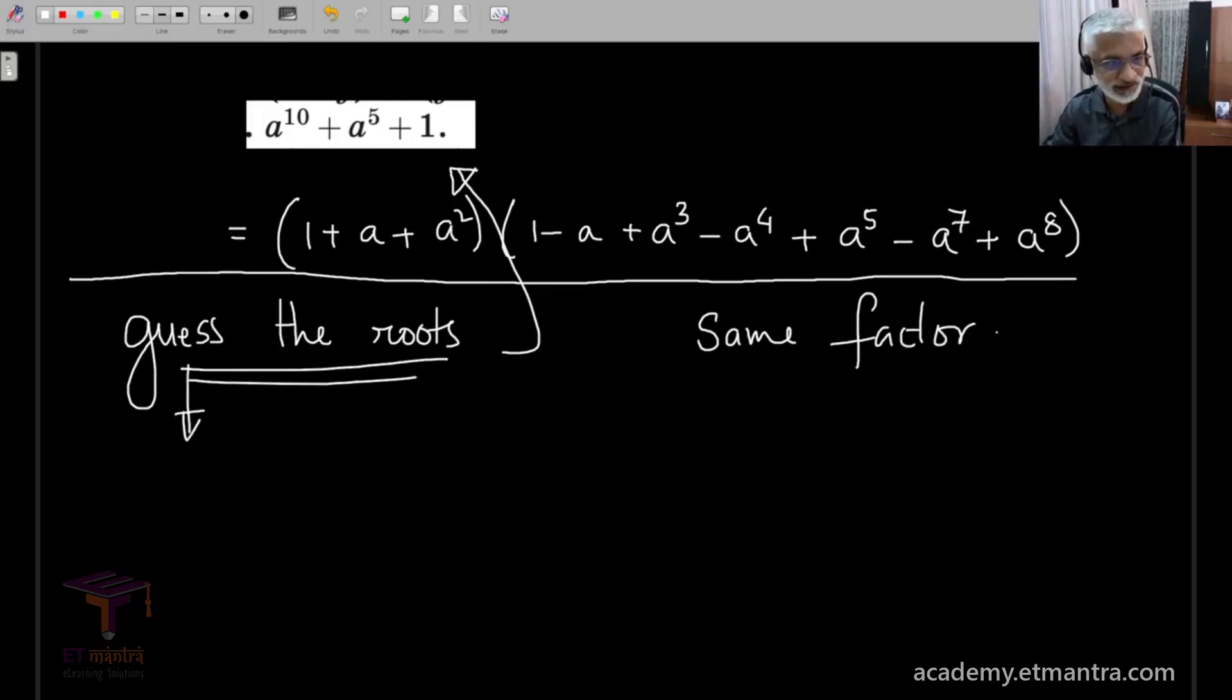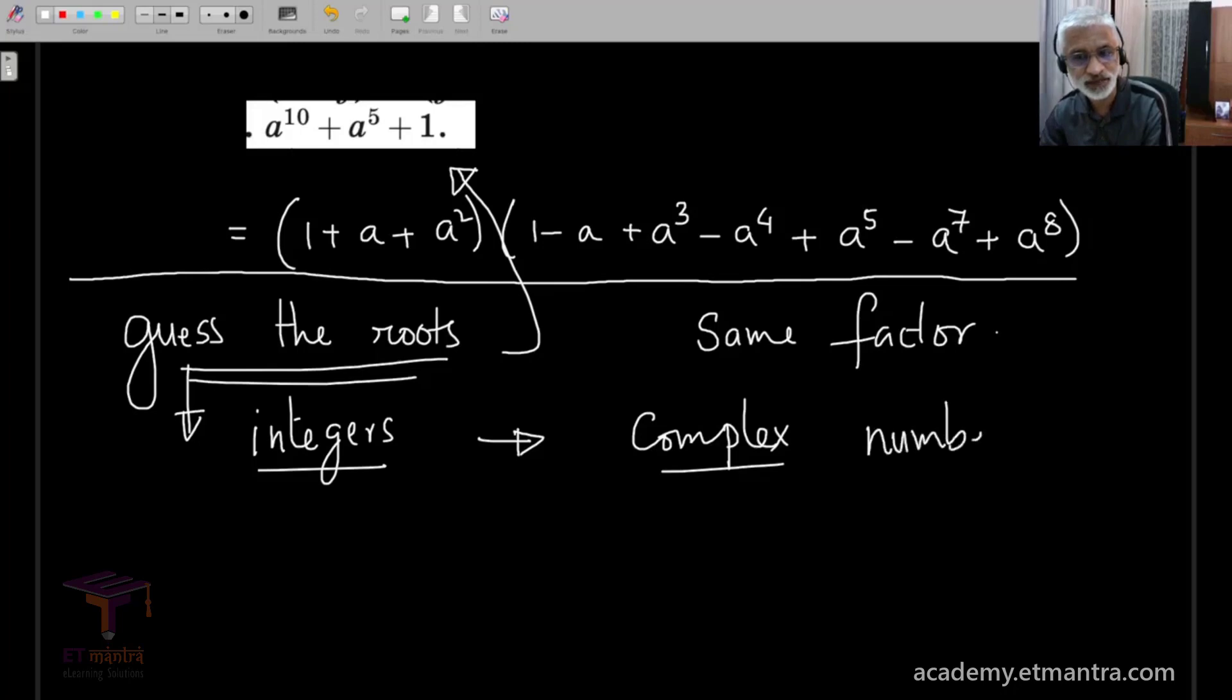Now, typically one guesses numbers or integers when one is asked to guess by brute force the roots of the polynomial. Now, in this particular example, it turns out that your guess has to be a complex number. So, that's the only confusing thing about this problem. A complex root will be the root of this equation. And in this case, it turns out that a very popular complex number is the cube root of unity.